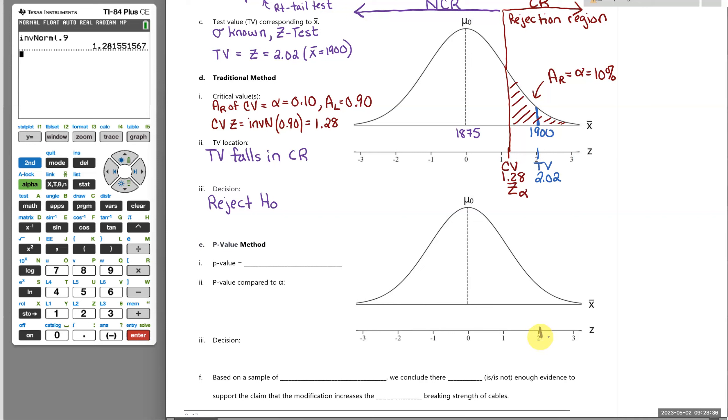All right. So for the p-value method, it's actually a little easier because the only thing we care about graphically is the test value. So 1875 is still the assumed mean when we start. And now we know that X bar of 1900 is there because we found its test value. So a p-value is the probability of getting something even further to the right than the test value. So the area to the right of the test value in a right tail test is called your p-value.